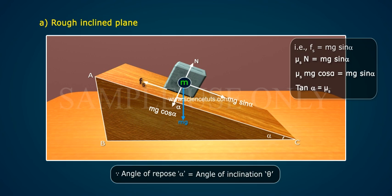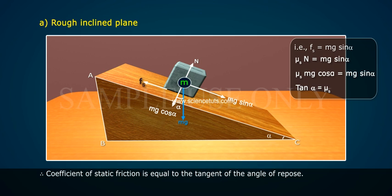Tan α equals μs. Therefore, coefficient of static friction equals the tangent of the angle of repose.